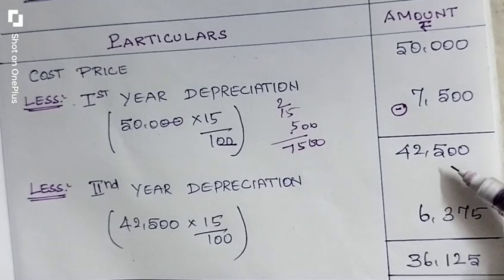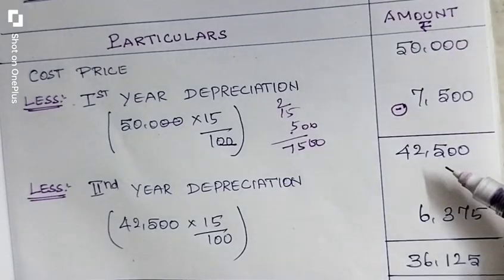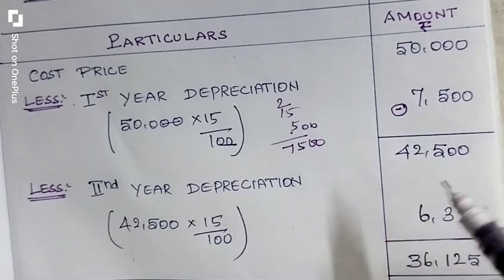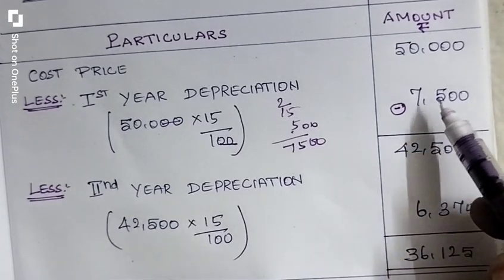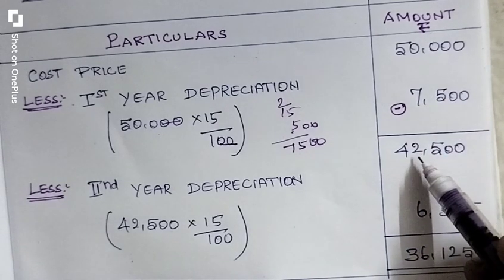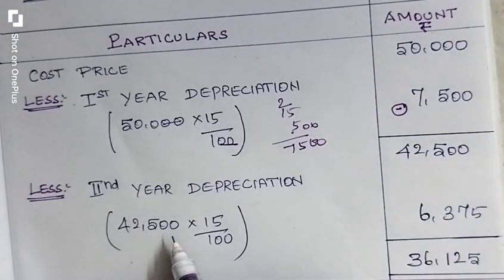Listen here carefully. We are going to calculate diminishing method, that means written down method. For that, after subtracting the depreciation, we have to take the amount from that for the next year depreciation.